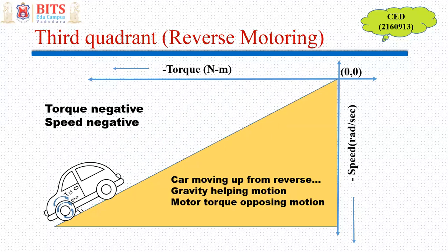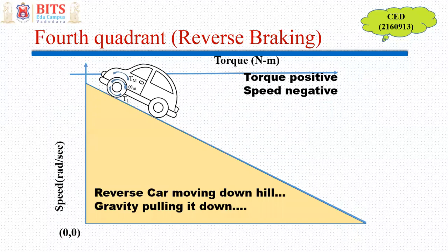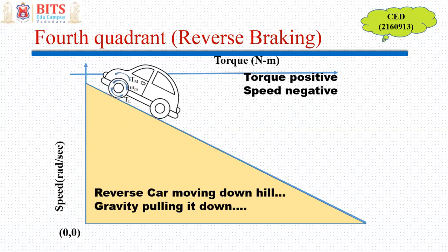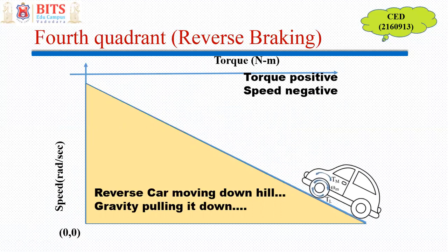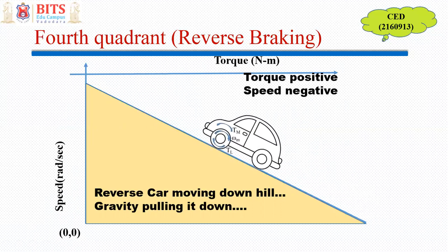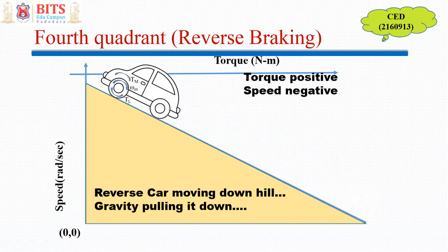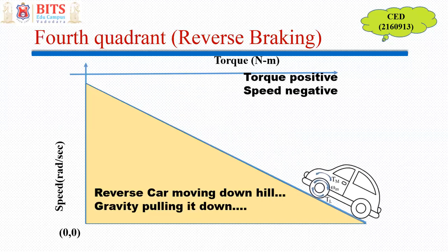The fourth quadrant: assume that in the reverse direction you want to bring the electric car down. When it tries to come down, gravity pulls it downward, supporting the motion. Load torque acts in the same direction as the motor's movement, and the motor torque opposes motion to avoid dangerous high speeds. Since movement is in the reverse direction and the motor is applying brakes, this is called reverse braking. The fourth quadrant is also known as reverse generation. The second and fourth quadrants are also known as braking modes or generating modes.